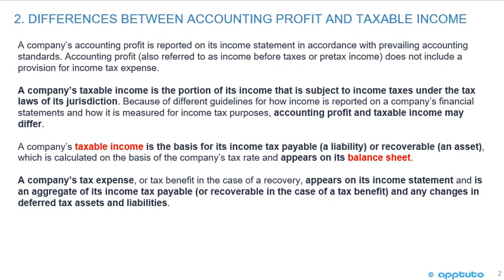That's the key point. We saw that LOS before, but it wasn't asking us to calculate or show an example. Now we're going to work through an example with some numbers. It's that a company's tax expense is an aggregate of its income tax payable and any changes in the deferred tax assets and liabilities.